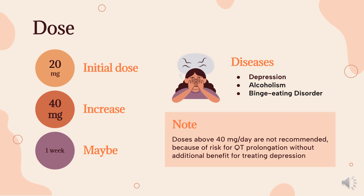Dose — Depression: For patients whose diagnosis corresponds most closely to the DSM-3 and DSM-3R category of major depressive disorder. Initial dose: 20 mg PO once daily. If needed, may increase to 40 mg per day after at least one week. Doses above 40 mg per day are not recommended due to the risk of QT prolongation without additional benefit for treating depression.